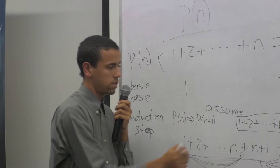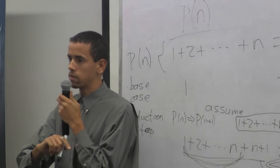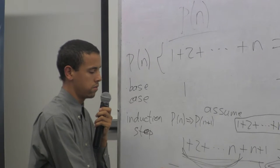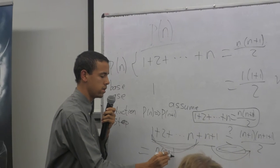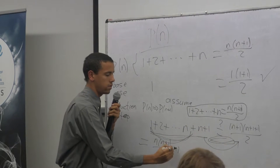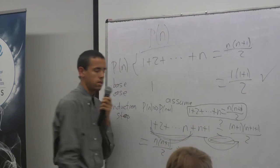So, this part is the same as that left-hand side. So, we know that this first part is n times n plus 1 over 2, and then we still have the other n plus 1.